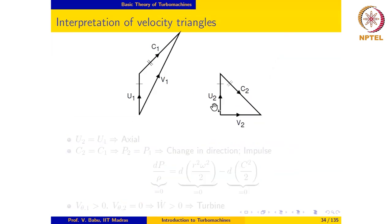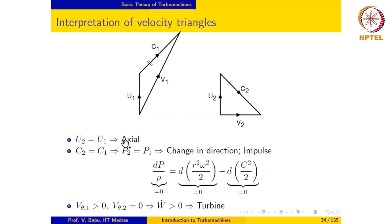Looking at this velocity triangle, it is indicated that u1 is equal to u2 and also that c1 is equal to c2. Since u2 equals u1, it is an axial machine, so dr is 0. Since c2 equals c1, dc is equal to 0. Therefore dp is equal to 0 for this rotor, which means the pressure remains constant and there is only a change in direction of the fluid — so this is an impulse machine.